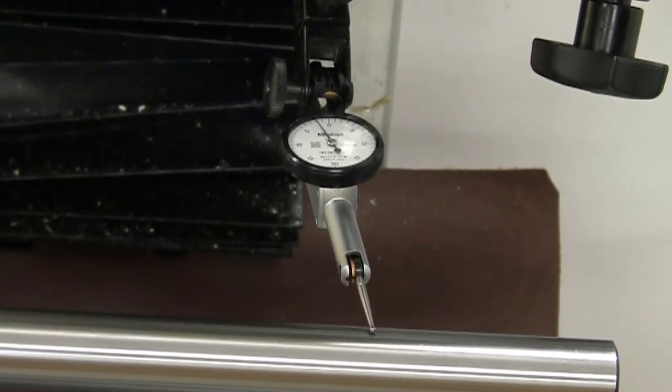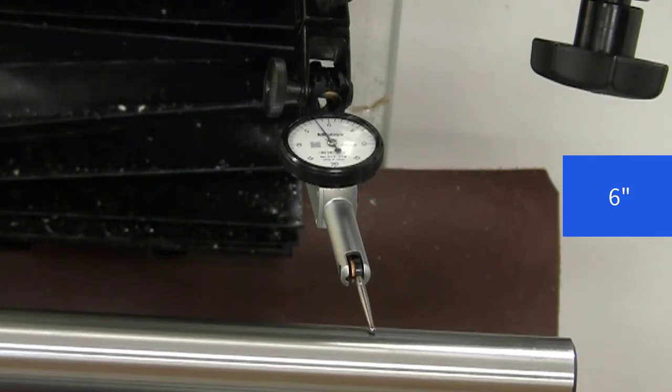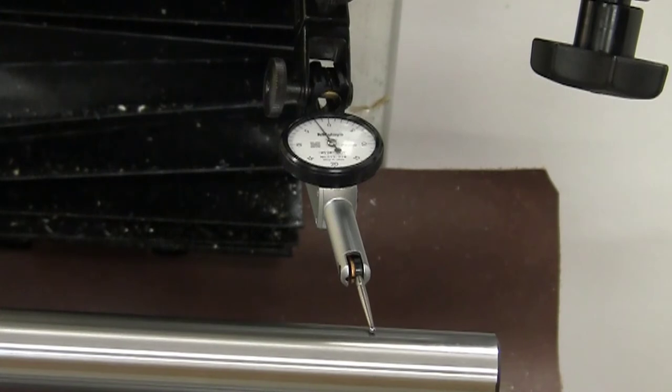So that's 4 inches and 5 inches. Again, just keeping an eye on the indicator. Remember, this is a round bar, so we may be falling off a little bit, and we will check for that in just a very short while.